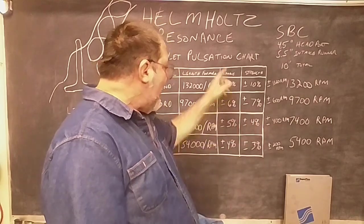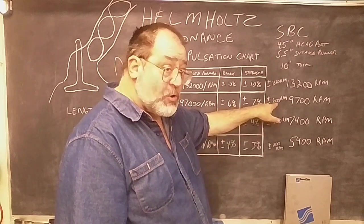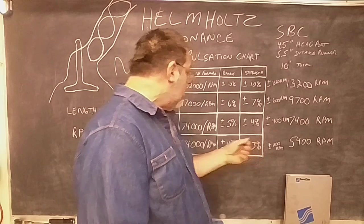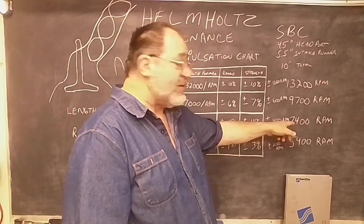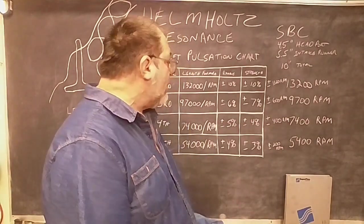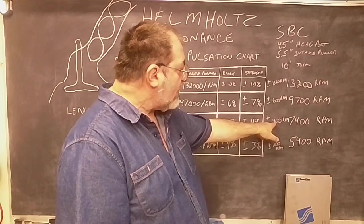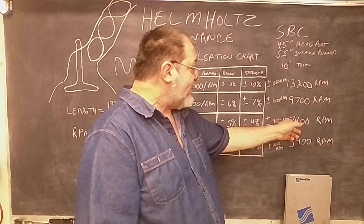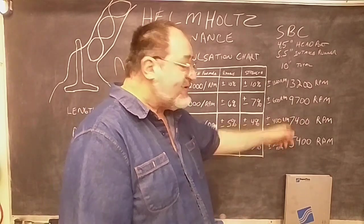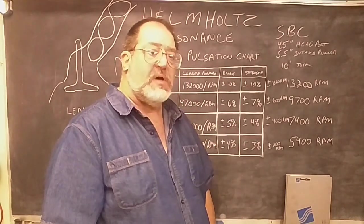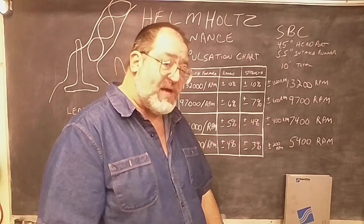And, if you look, as we go down, the strength starts to drop, and the range it works at starts to drop. So, let's go on down to the fourth harmonic, and now you're down to 7,400 RPM. Well, that's in the range of a small block. We can use that. But, the range that that's working is only 400 RPM. So, from 7,000 to 7,800, it's going to help you. Below 7,000 RPM for a bit of a range, it's going to hurt you.